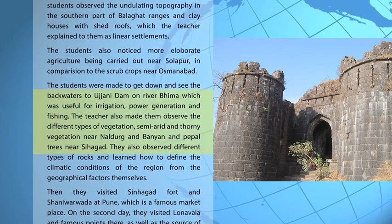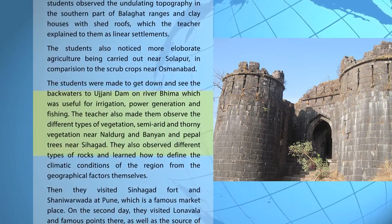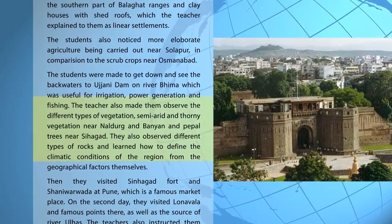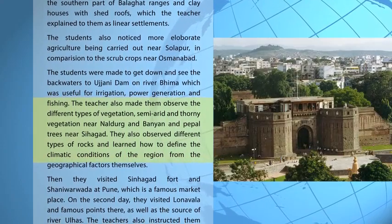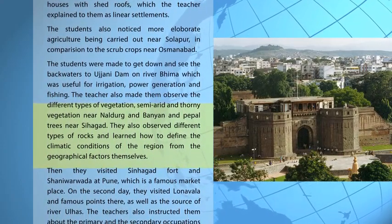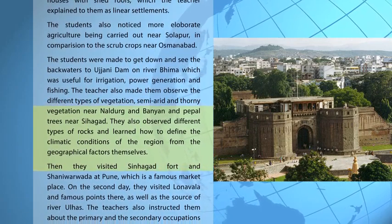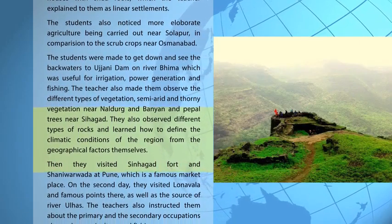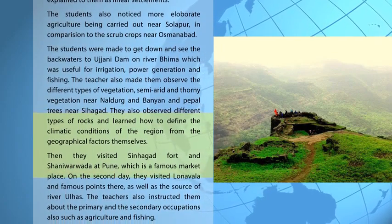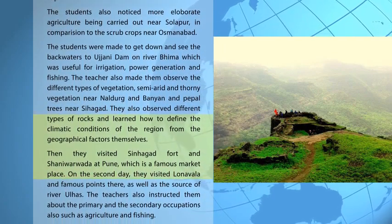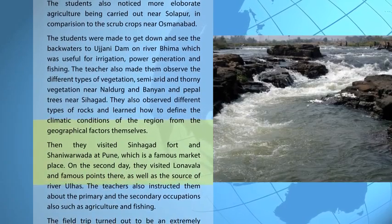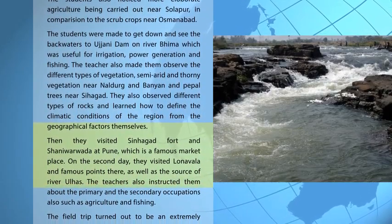The teacher also made them observe the different types of vegetation — semi-arid and thorny vegetation near Nal Durg and banyan and peepal trees near Sinhagad. They also observed different types of rocks and learned how to define the climatic conditions of the region from geographical factors. Then they visited Sinhagad fort and Shanivarwada at Pune, which is a famous marketplace.